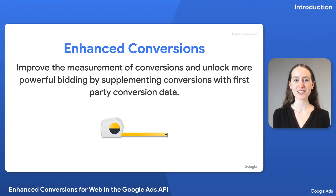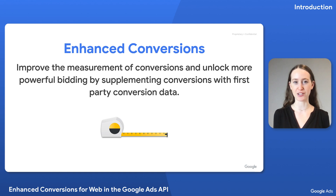If you find this video helpful, give it a thumbs up and subscribe to our channel to be notified about new videos. Enhanced Conversions is a feature that can improve the accuracy of your conversion measurement and unlock more powerful bidding by supplementing the data provided by your existing conversion tags with hashed first-party conversion data.